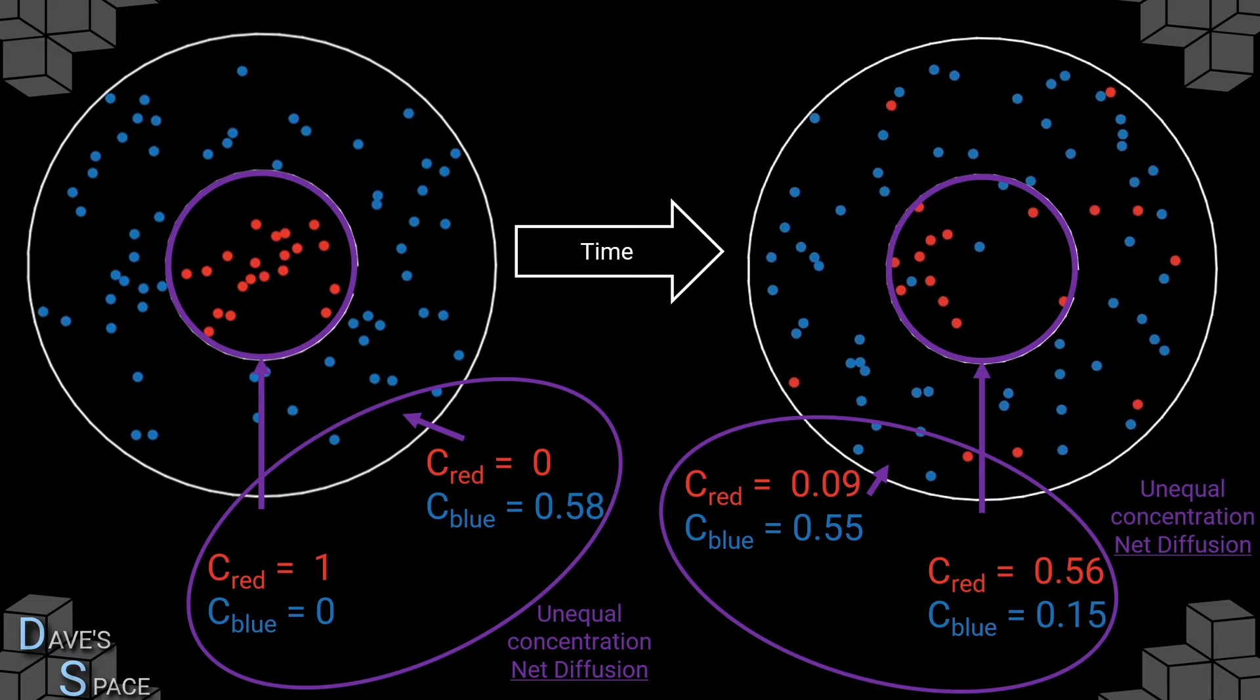And likewise, even after we've waited some time, the concentrations indeed have changed, but they are still unequal. Therefore, there will still be net diffusion across the boundary.